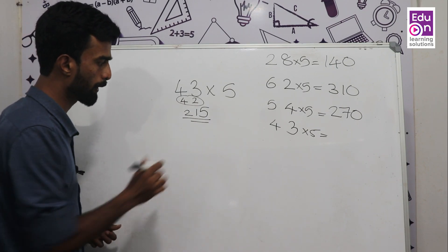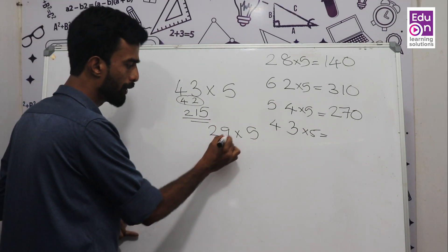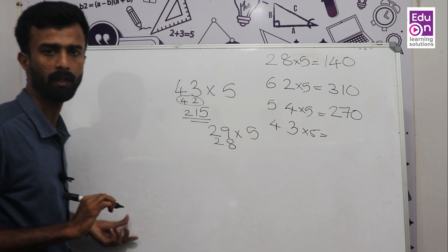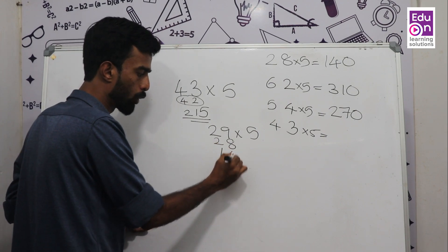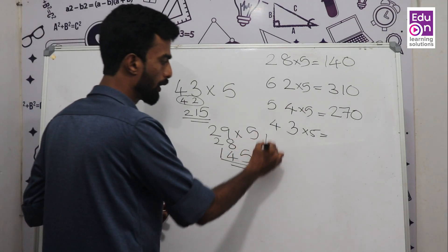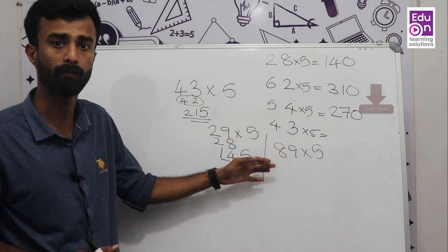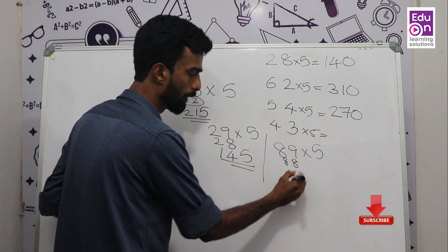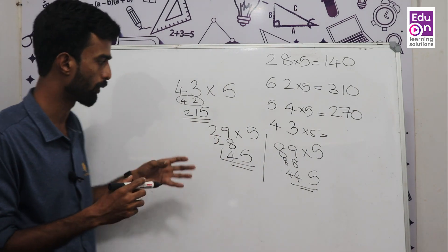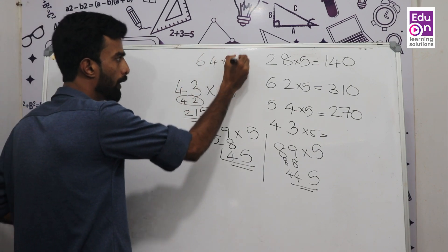215 is easy to get. Let's say 29 × 5 — we use 28 as the even neighbor. Half of 28 is 14, times 10 is 140, then add 5 to get 145. So 29 × 5 = 145. Another example: 64 × 5 = 320. Easy multiplication!